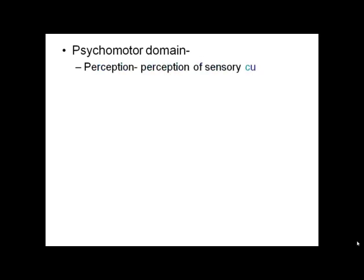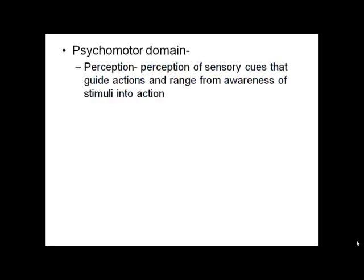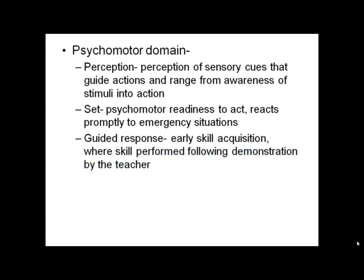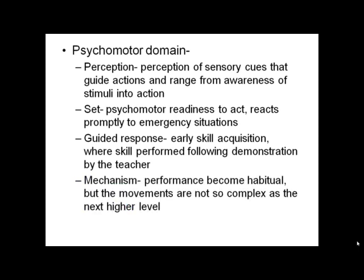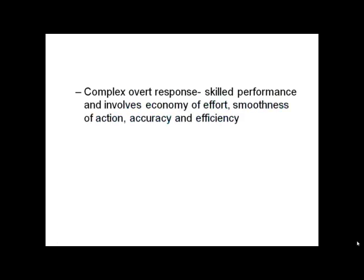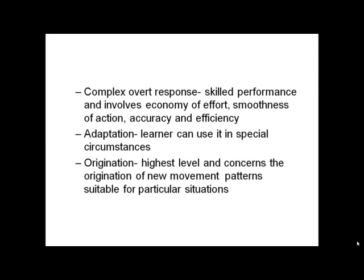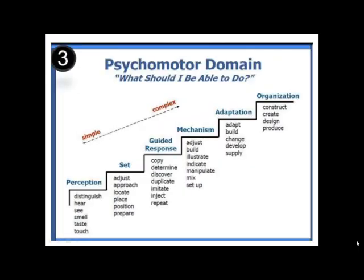The third domain is psychomotor. First level is perception — the use of sensory cues that guide actions, ranging from awareness of stimuli to action. Second is set — psychomotor readiness to act, such as reacting promptly to an emergency situation. Third is guided response — early skill acquisition where the skill is performed following demonstration by the teacher. Fourth is mechanism — performance becomes habitual. Fifth is complete overt response — skill performance involving economy of effort, smoothness of action, accuracy, and efficiency. Sixth is adaptation — the learner can use the skill in special circumstances. Seventh is origination — the highest level, concerned with creating new movement patterns suitable for a particular situation. Verbs for perception include: see, smell, taste, touch.